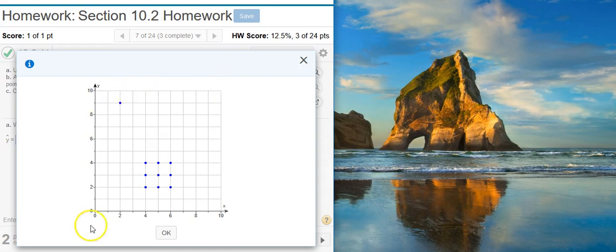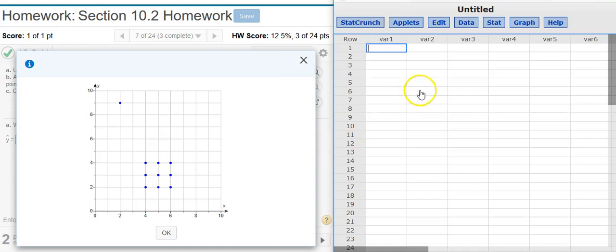Notice there's no icon here to actually dump the data into StatCrunch. So I'm going to call up StatCrunch and we're going to have to put these ordered pairs for each of these data points in manually.